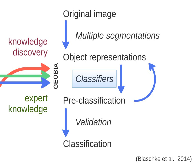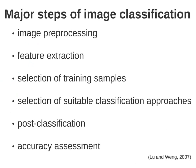As proposed by Blaschke in 2014, we have more or less a data flow in order to have a classification using the GEOBIA technique. We have the original images; we can apply multiple segmentations to obtain object representations. We apply several classifiers in an iterative process to obtain pre-classification and new object representations, and we do this cycle until we are satisfied with the results. Then, with a validation, we come to the final classification. The core of this presentation is related to the classifiers part.